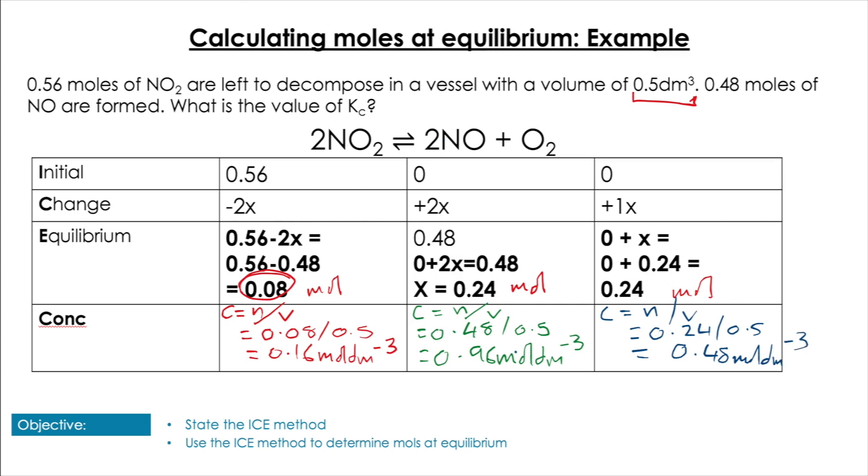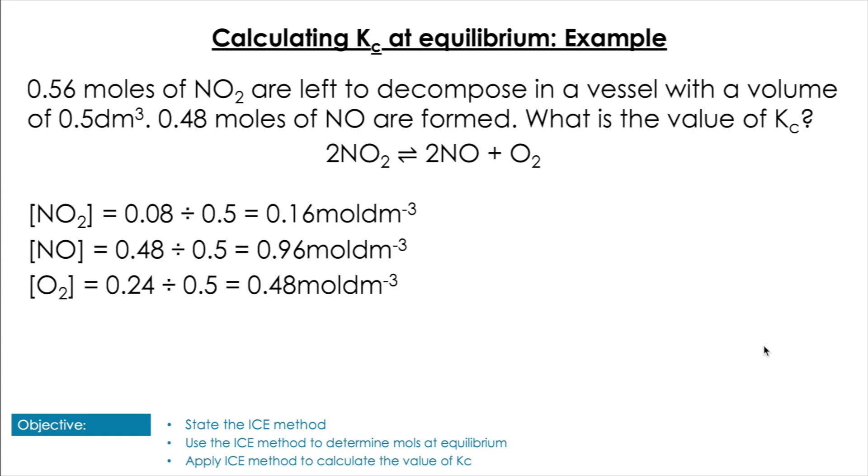Now we've got all these concentrations, we can put them into the equilibrium expression. Remember, Kc equals products over reactants. So we have [NO]² × [O₂] all over [NO₂]².